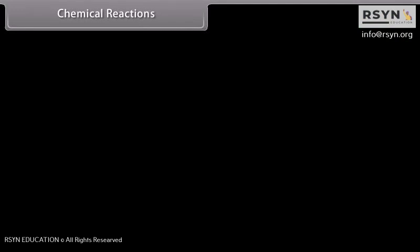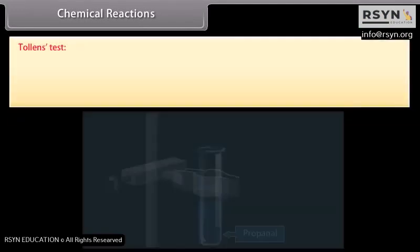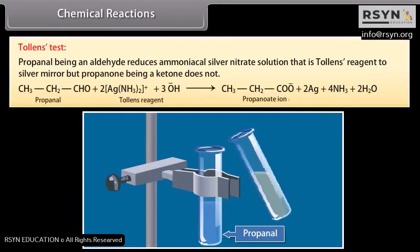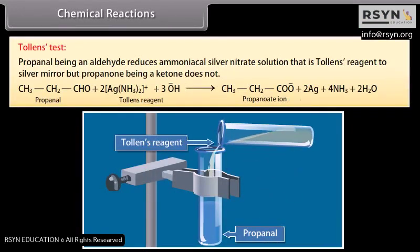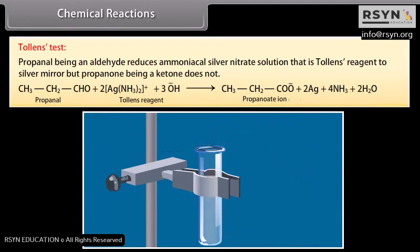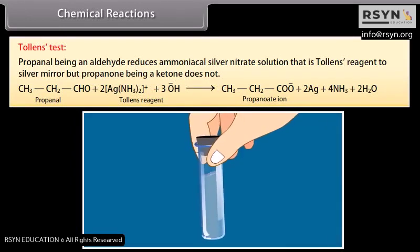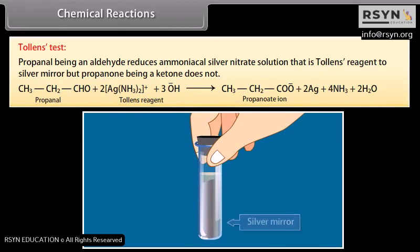Tollens test: propanal, being an aldehyde, reduces ammoniacal silver nitrate solution (Tollens reagent) to form a silver mirror, but propanone, being a ketone, does not.